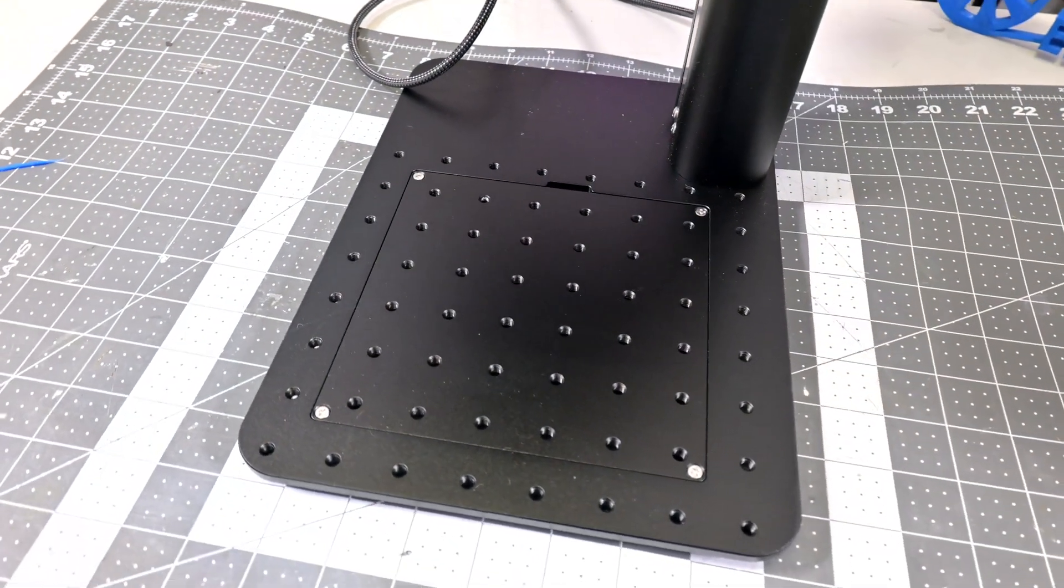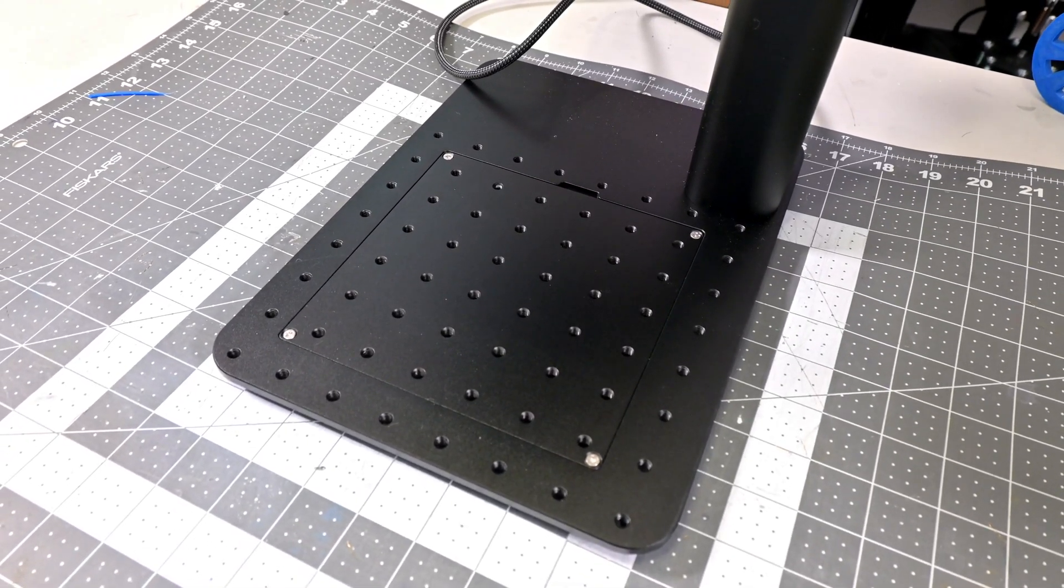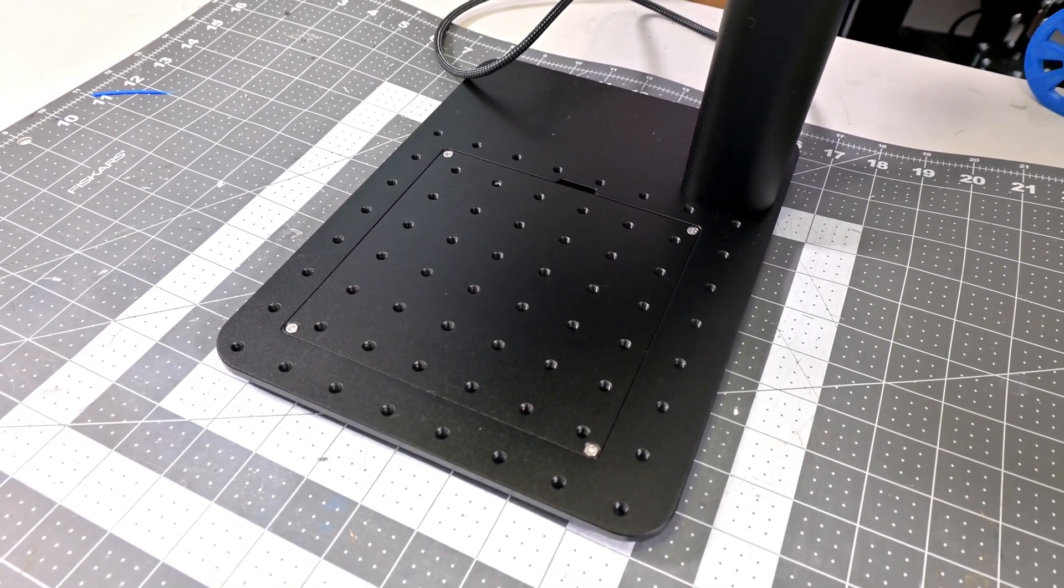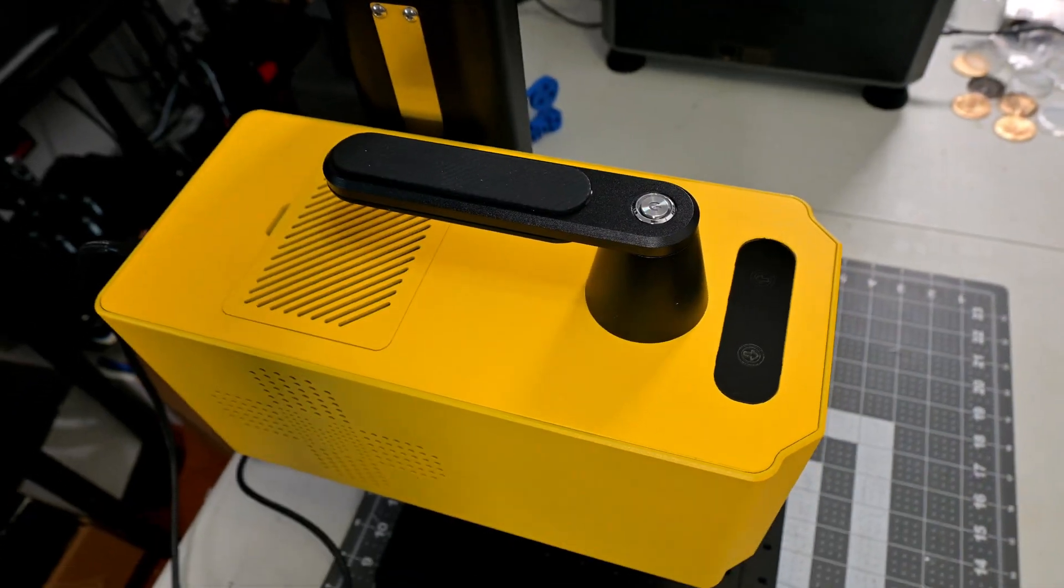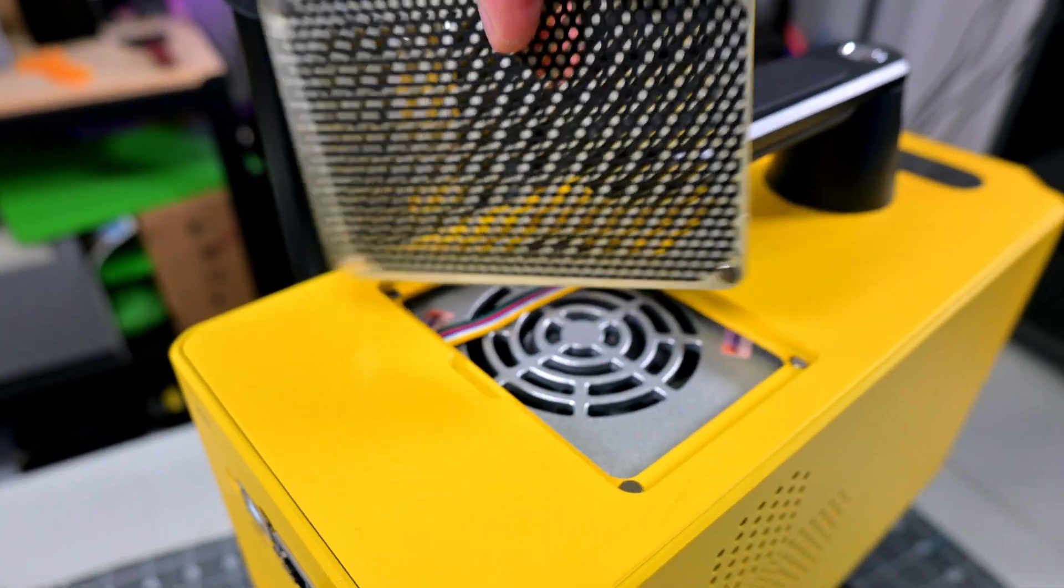The work area has a grid of threaded holes. You can use those holes to create alignment jigs, allowing you to consistently position materials for engraving batch jobs. The top of the laser consists of the handle with the power button and the up and down buttons for the lifting stand. There is also a removable filter, making it easy to clean and maintain.